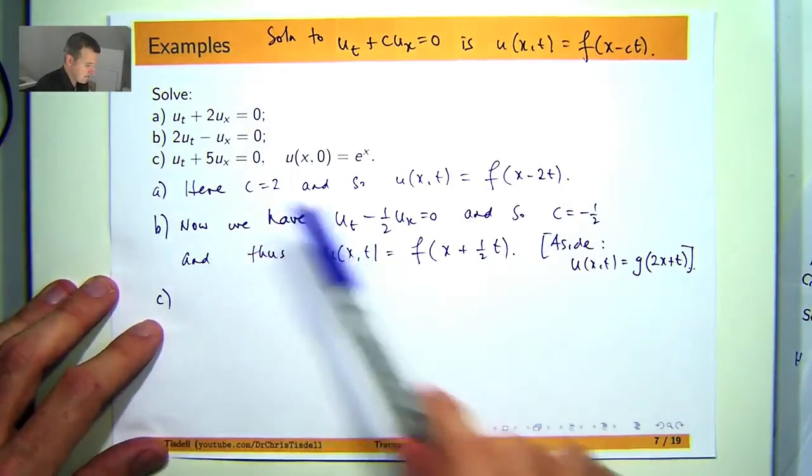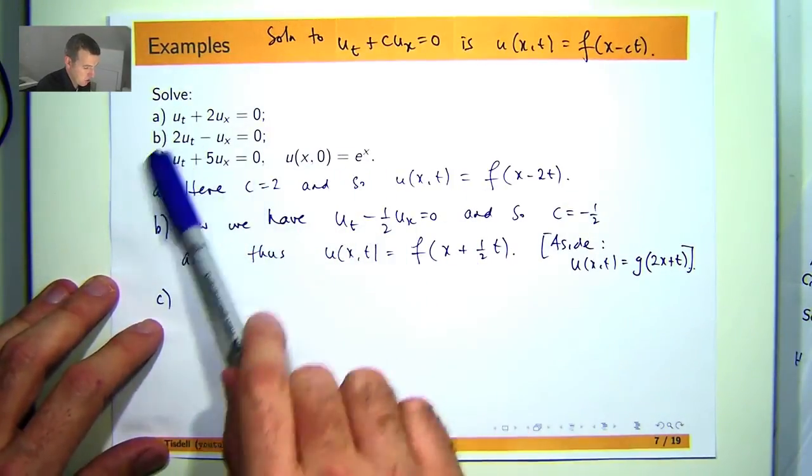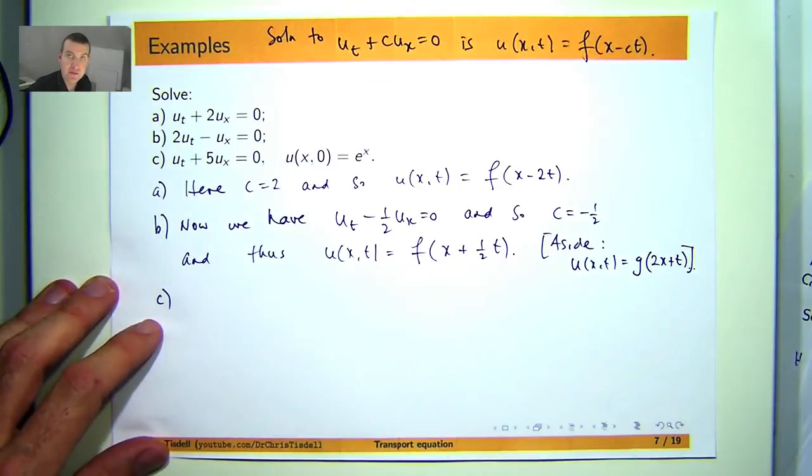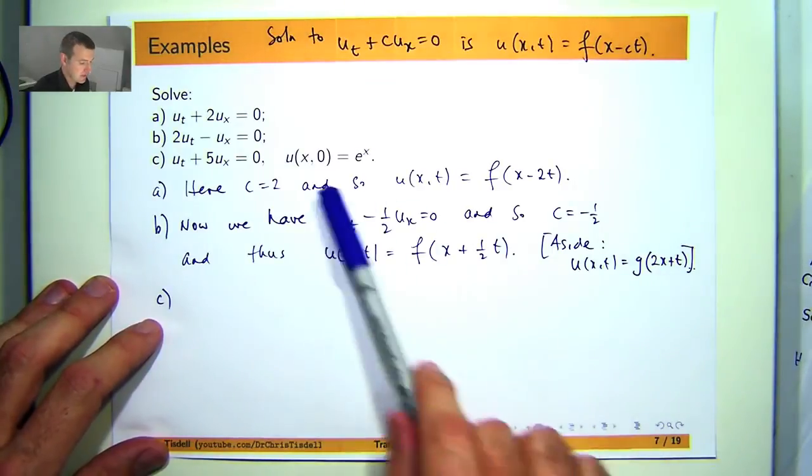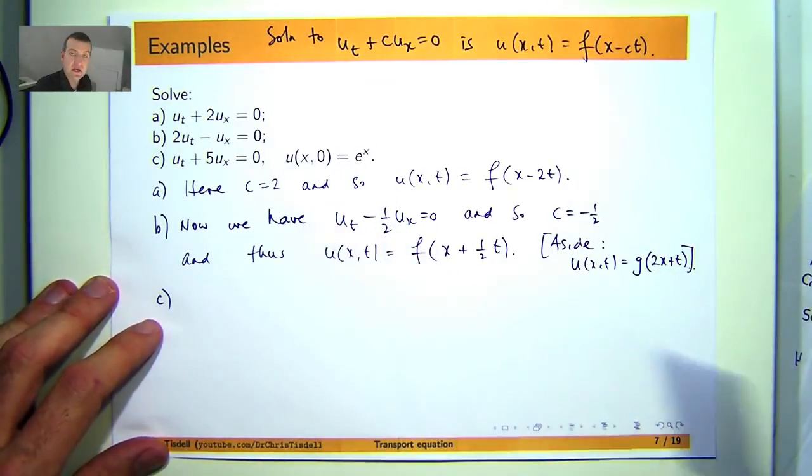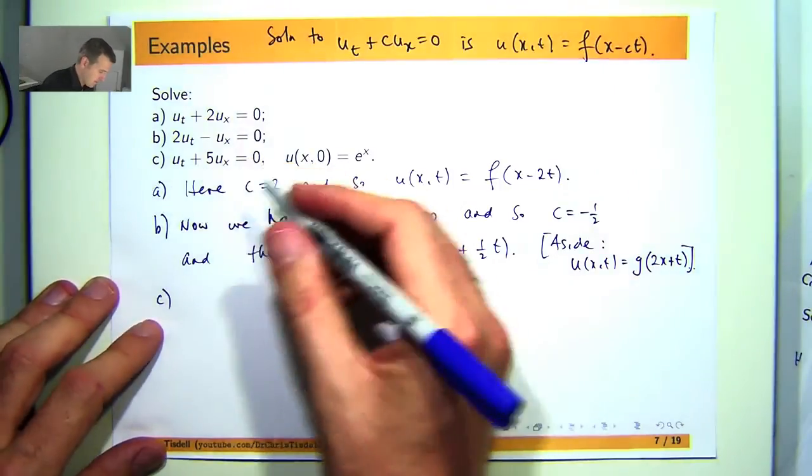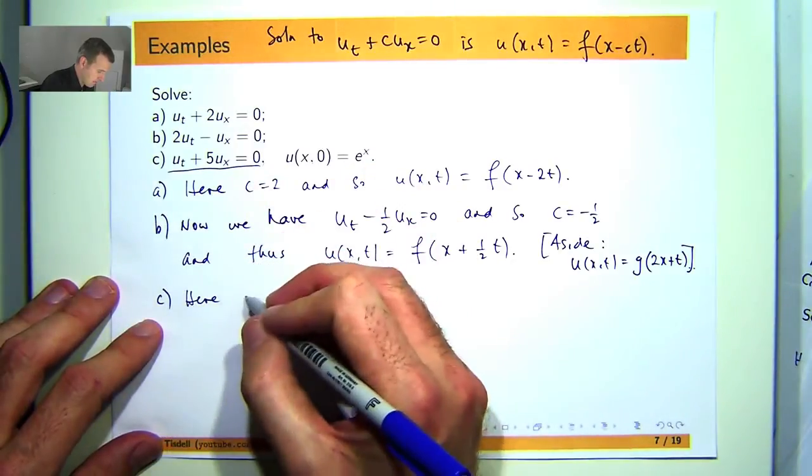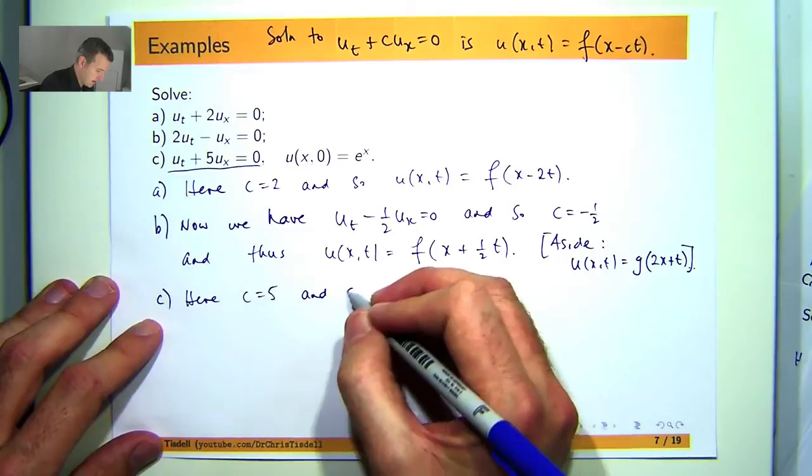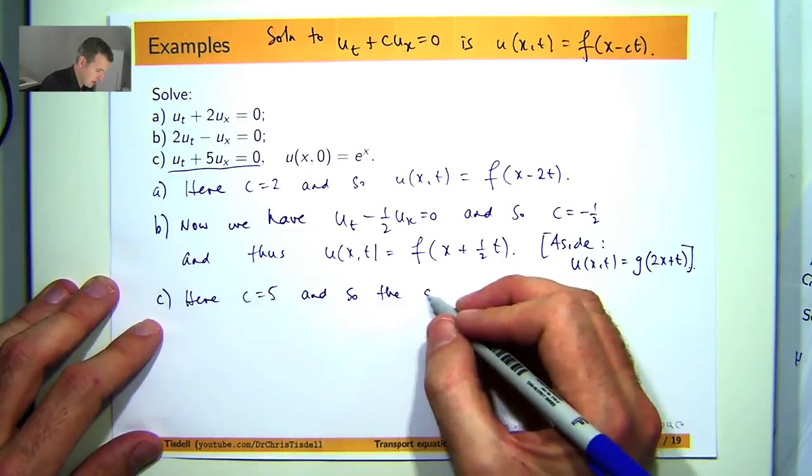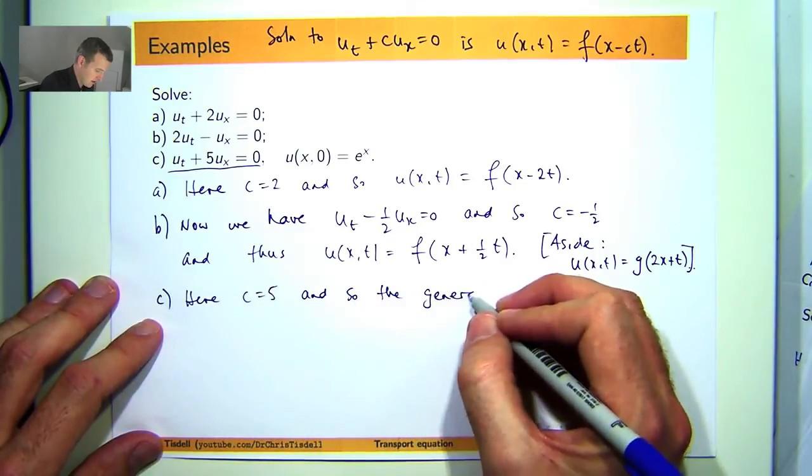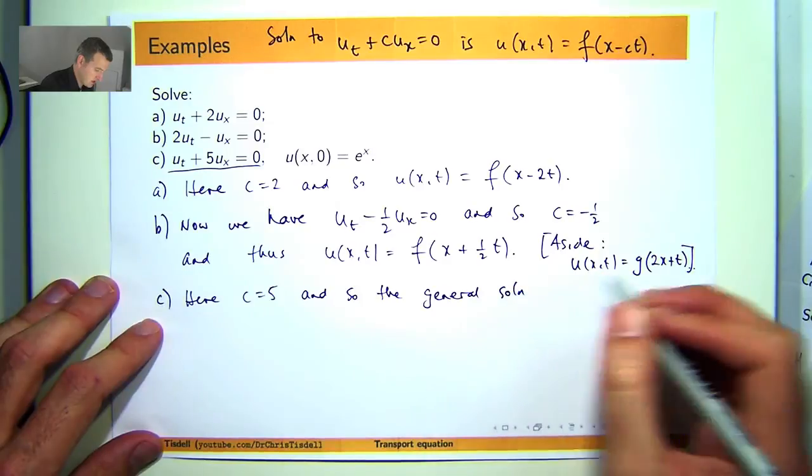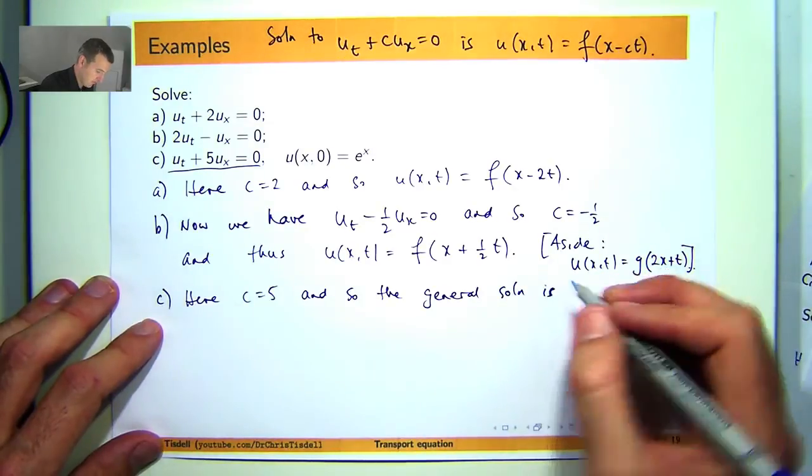Now lastly C, let's solve the PDE and formulate its general solution and then we're going to refine the solution using the initial condition. So in our PDE C is 5 and so the general solution is the following.